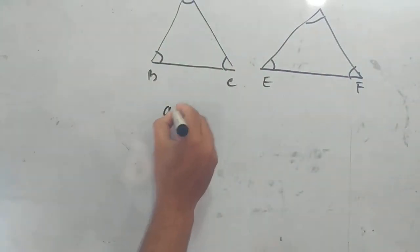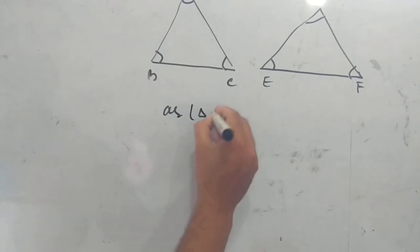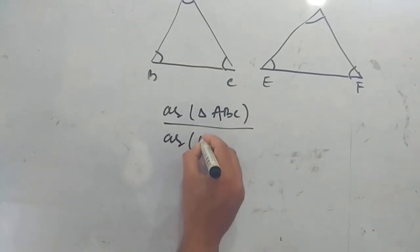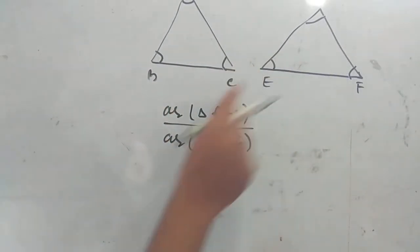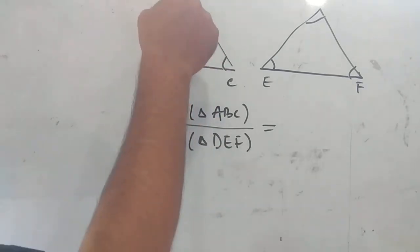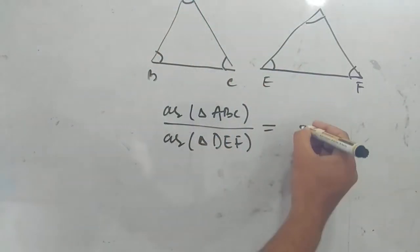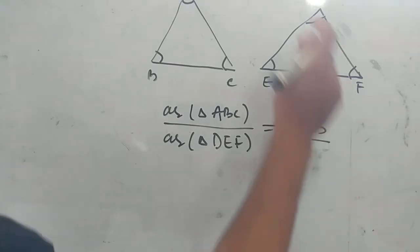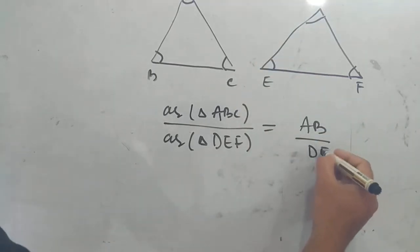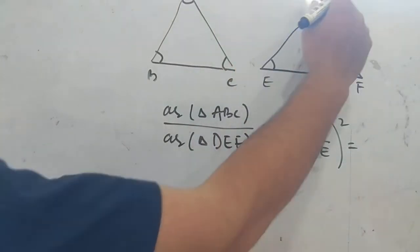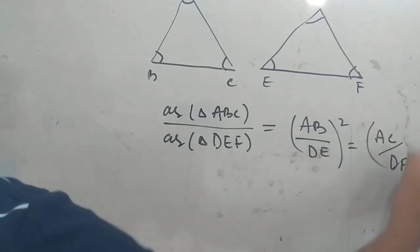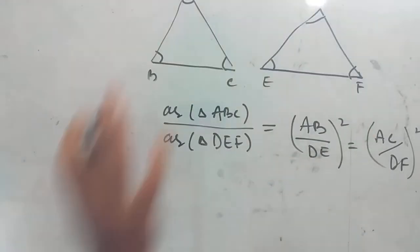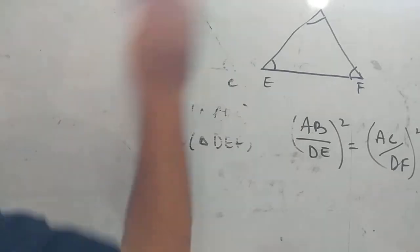The ratio of the area of triangle ABC to triangle DEF — the ratio of the areas of two similar triangles is equal to the square of their corresponding sides. Because of the corresponding side DE, we can write AB squared divided by DE squared. Similarly, AC squared divided by DF squared, and BC squared divided by EF squared.